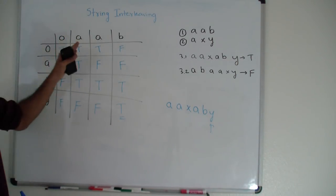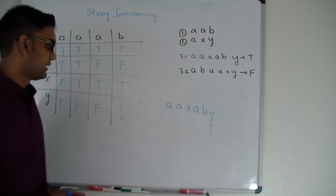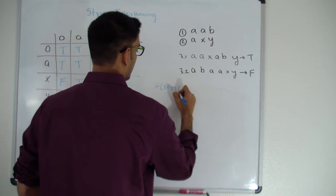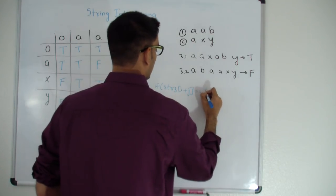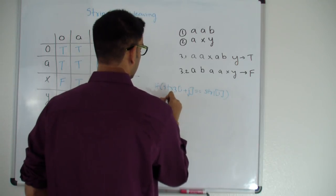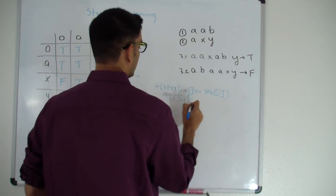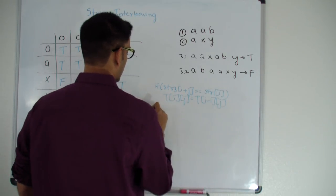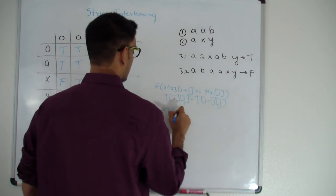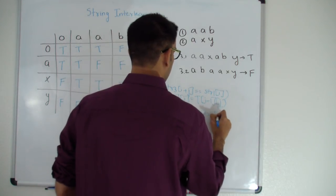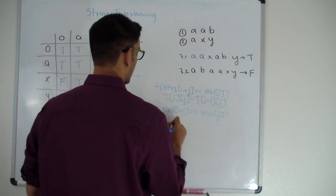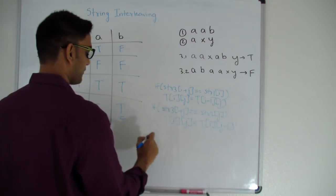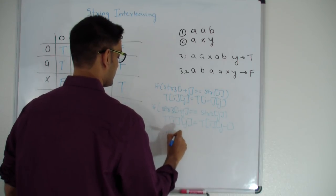So finally, this is our answer: yes, 'aab' and 'axy' will interleave to form 'aaxaby'. Let me quickly write the formula. If STR3[i+j] == STR1[i], then T[i][j] = T[i-1][j] — I'm looking at the guy on top. If STR3[i+j] == STR2[j], then T[i][j] = T[i][j-1] — I'm looking at the value to the left. For everything else, T[i][j] = false.